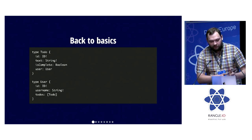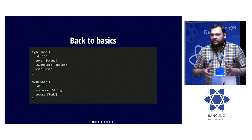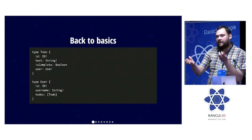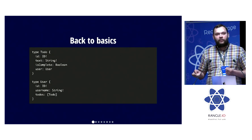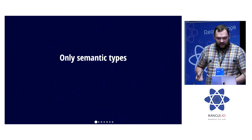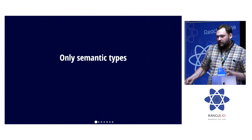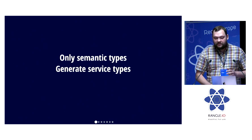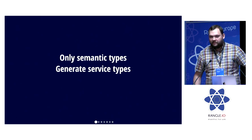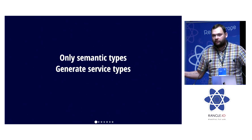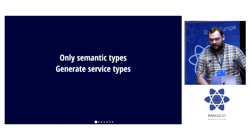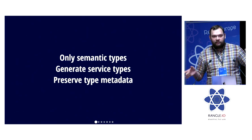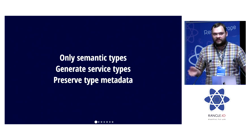But if you focus on those semantic types, things become much more interchangeable. If you have a set way to connect those types, you have a set way to share your schema. So what I'm proposing is that we need a high-level language that only focuses on semantic types — and we generate all the service types, all the mutations, all the connections that you need to have a usable GraphQL API. This way, we preserve the type metadata.